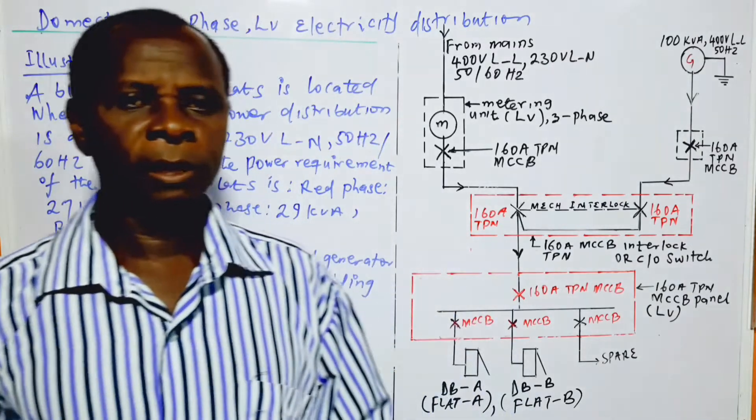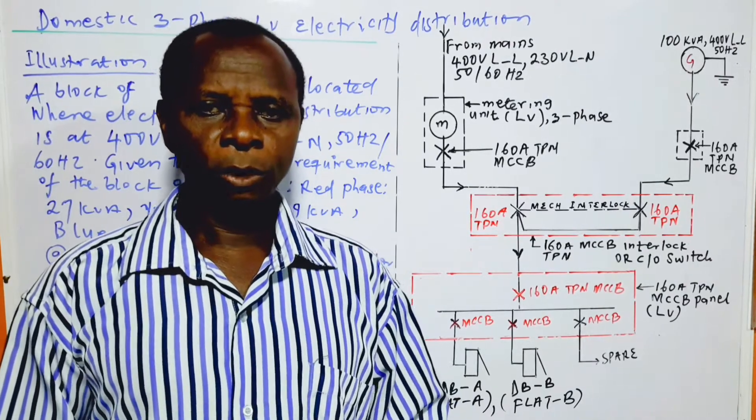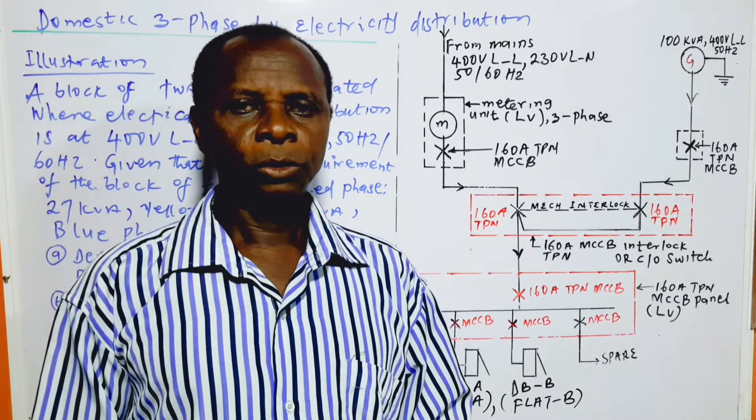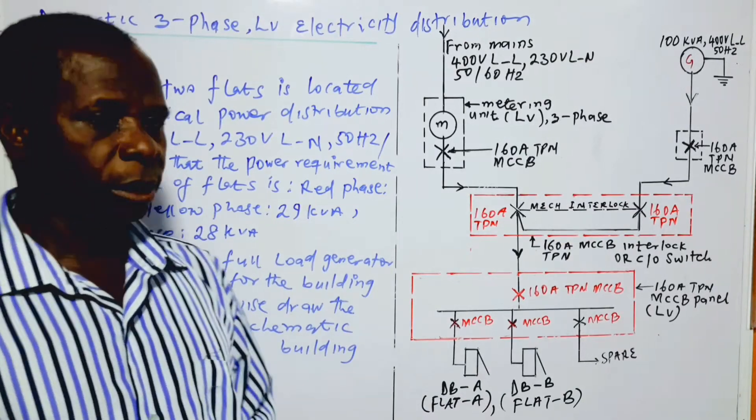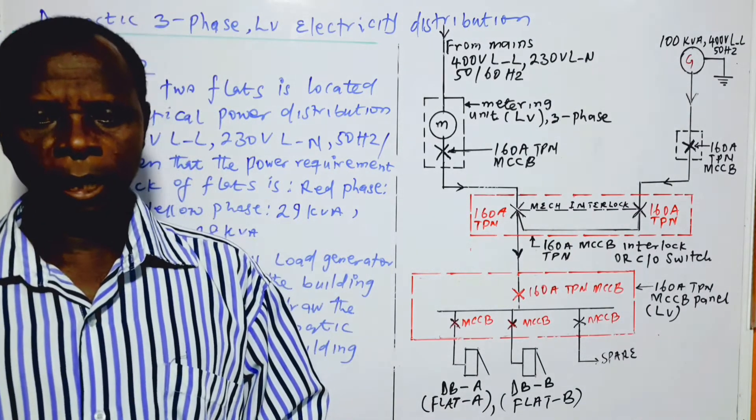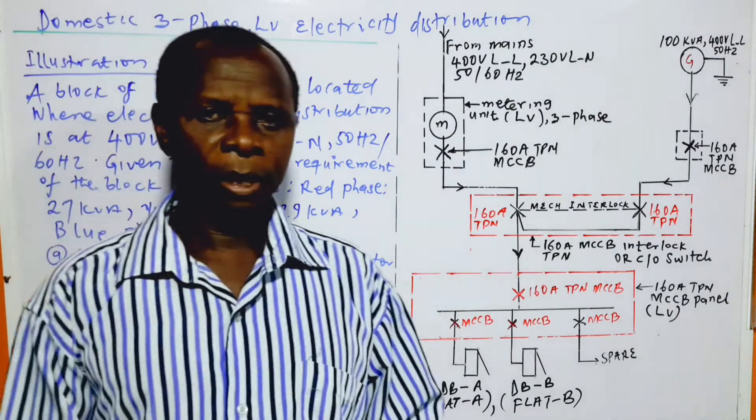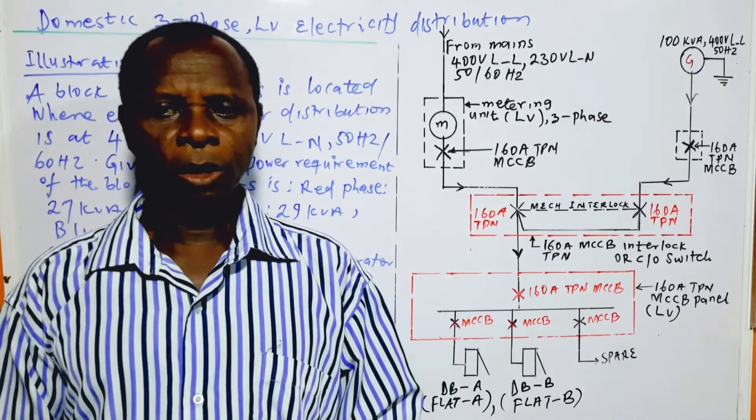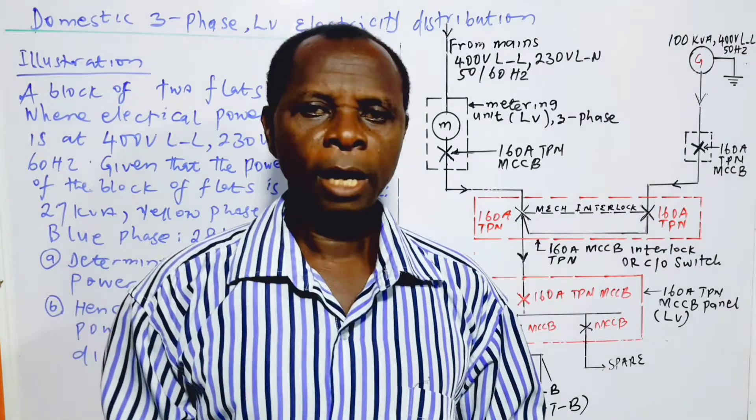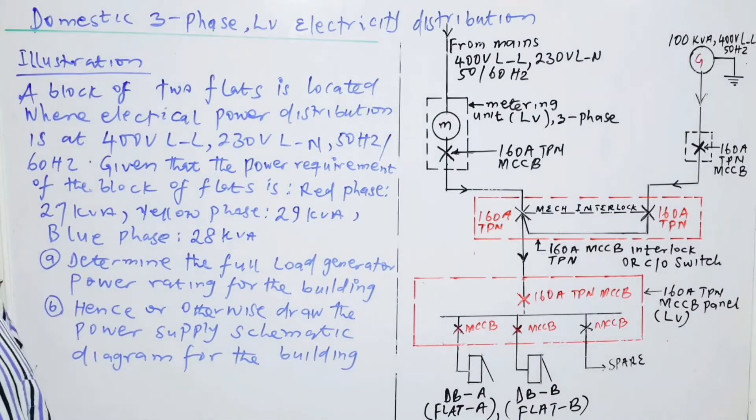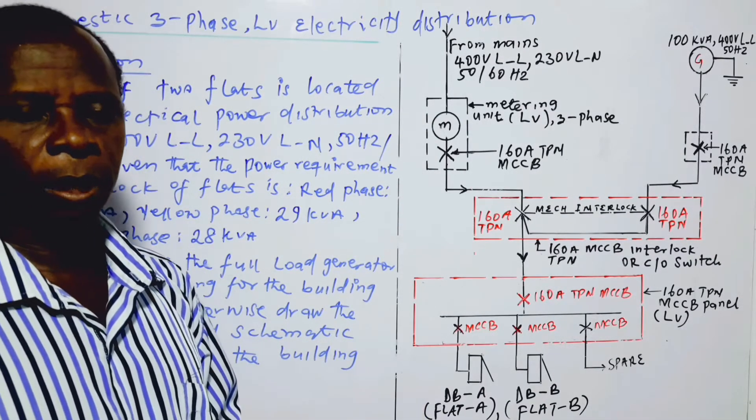This video is about domestic three-phase electricity distribution at low voltage without the use of a transformer. In this case, the transformer is not necessary because the power requirement is not high or the load is not big. Please do subscribe to my channel and follow me in this video as I make use of an example to illustrate the concept.